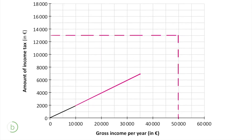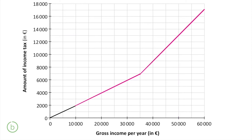We already worked out in the previous part that if Lorna makes €50,000 per year her income tax will be €13,000, so we know that our line is going to pass through this point. Since it's still linear with a different slope, we can just connect these two points and continue our line on. And there we go, that's our graph drawn.